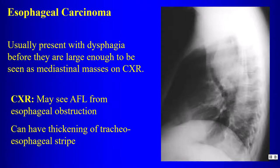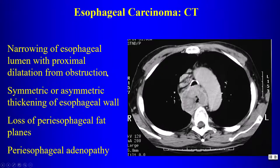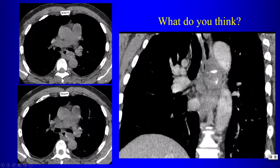Esophageal lesions can present as middle mediastinal masses. They usually present with dysphagia before they are large enough to be visible on chest radiograph. You might see an air-fluid level from obstruction, thickening of the tracheoesophageal or retrotracheal stripe, circumferential esophageal narrowing, loss of periesophageal fat planes, and lymphadenopathy.